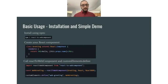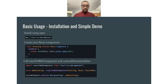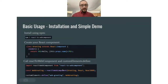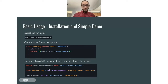Once we have this component — and this can be any React component — we call `reactToWebComponent` and `customElements.define`. To call React to Web Component, we first import it from the library. Then we create a constant called `WebGreeting` and assign it the result of calling `reactToWebComponent`, passing in our greeting component, React, and ReactDOM. All that's left is to define the `web-greeting` custom element using `customElements.define` with our `WebGreeting` constant.